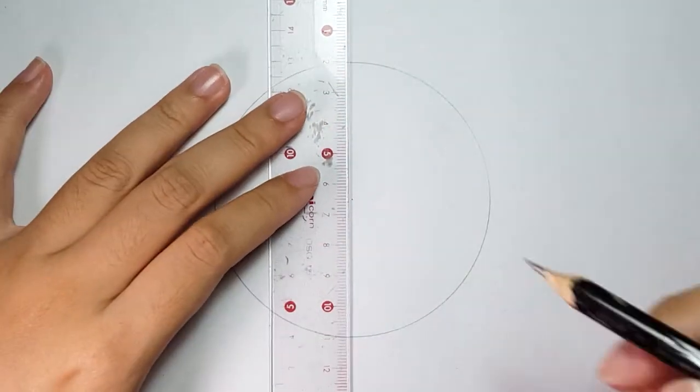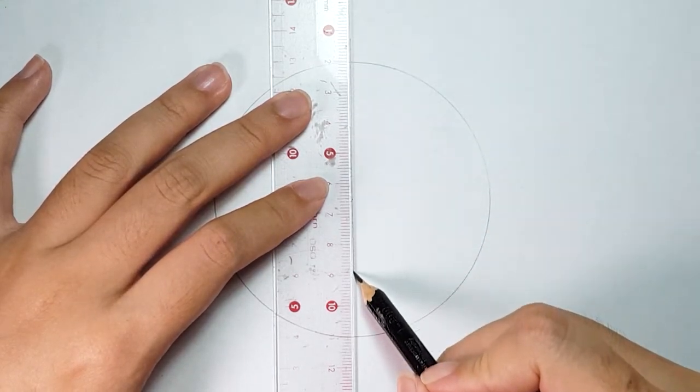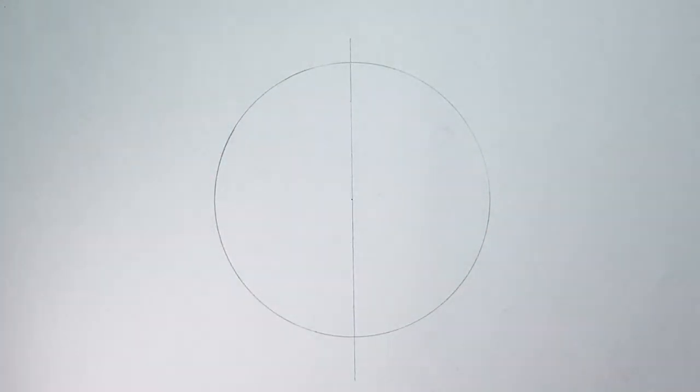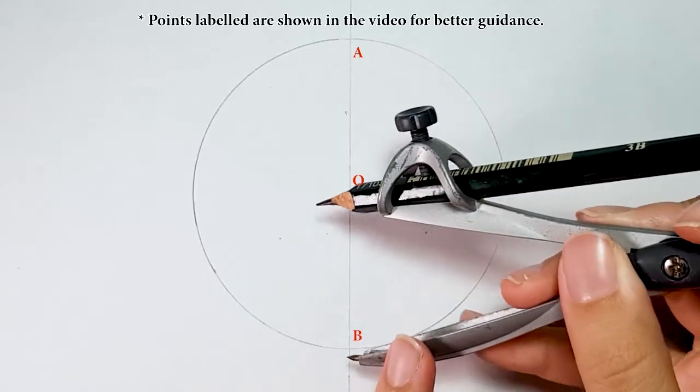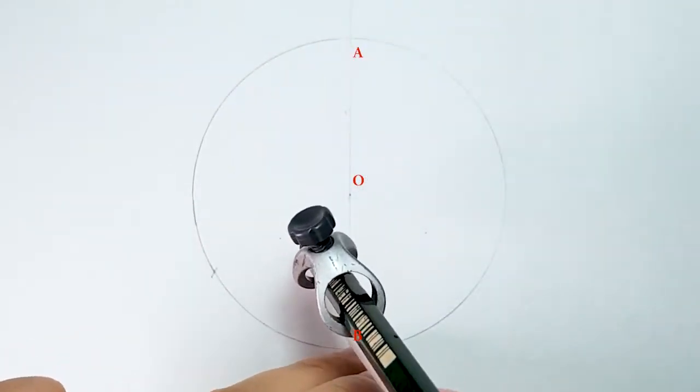Next, draw a diameter line with a ruler at the center of the circle. These points are A, O and B. Place your compass on point B and A to draw marks on both sides of circumference.